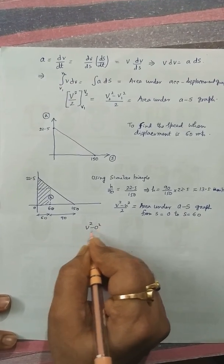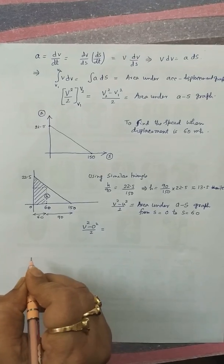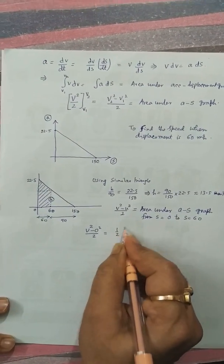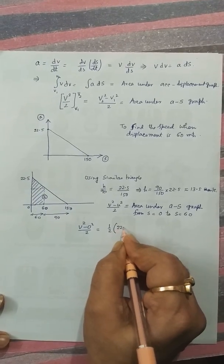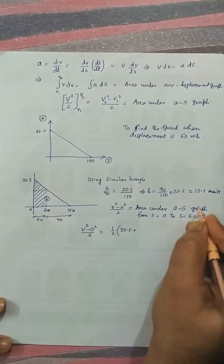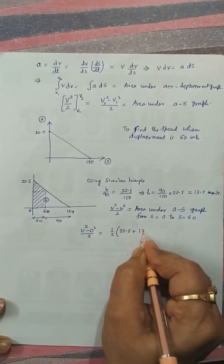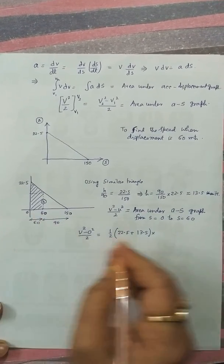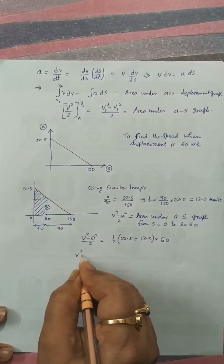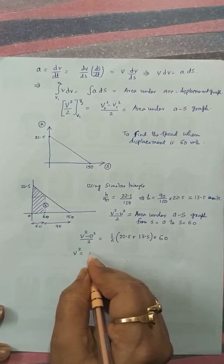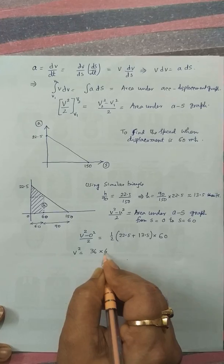V square minus 0 square divided by 2 is equal to half sum of the parallel sides 22.5 plus 13.5 into the gap between them 60. Solving this we get v square is equal to 36 into 60.